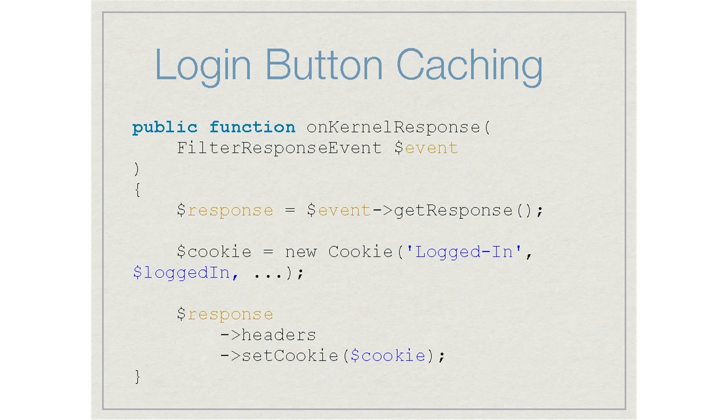In the controller action, we vary on a header called 'logged-in' and render the response. A kernel listener added to Symfony checks the security context to see if the user is authenticated and sets that header on the response accordingly. We also set a cookie with the same value as the header, illustrating whether the user is logged in or not — both the header and the cookie value go back in the response.